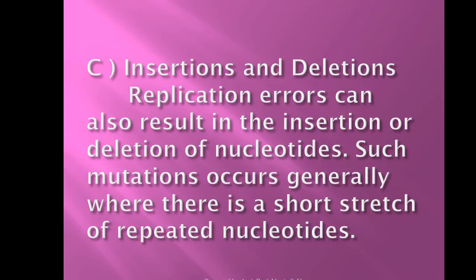The next types of mutations are insertions and deletions. As the name suggests, there is an insertion of some nucleotides or in some cases a removal or deletion of some nucleotides. These replication errors can result in insertion or deletion of nucleotides, and generally occur where there is a short stretch of repeated nucleotides. Whether there is an insertion or a deletion, both result in a change in the sequence of the DNA molecule, causing mutation.